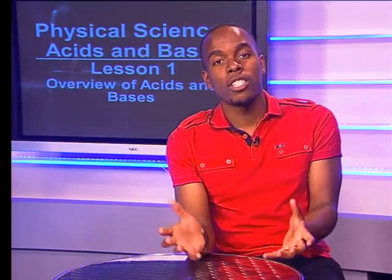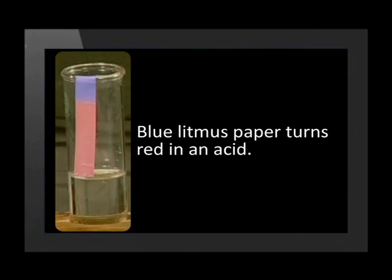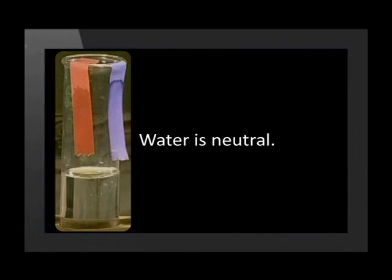A simple way to test whether a liquid is an acid or a base is to use a chemical indicator like litmus paper. Red litmus paper turns blue in a base, and blue litmus paper turns red in an acid. If the litmus paper does not change color, then the solution is neutral. Pure water is an example of a neutral solution — water is neither acidic nor basic.